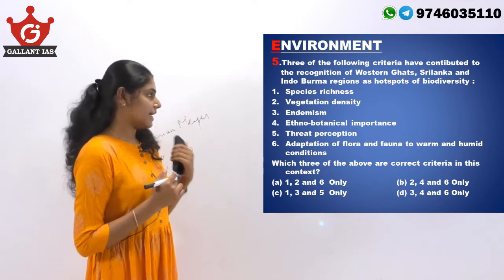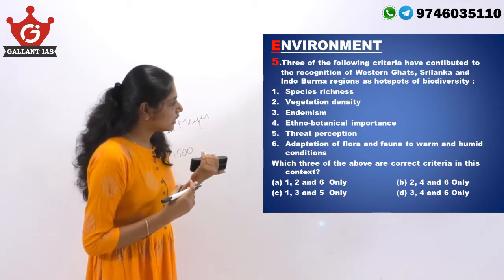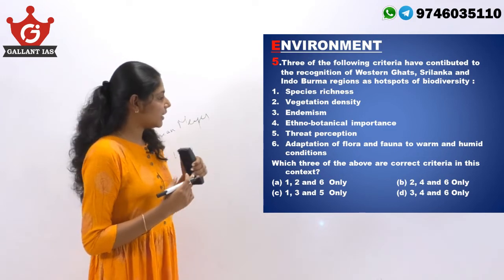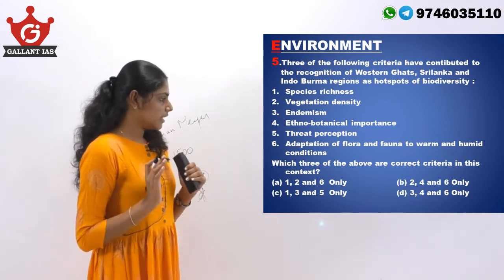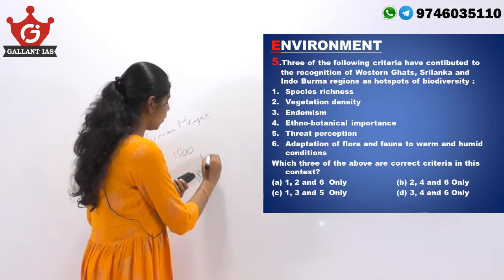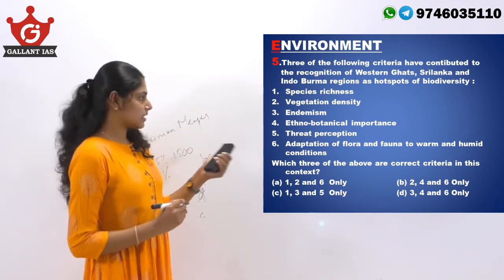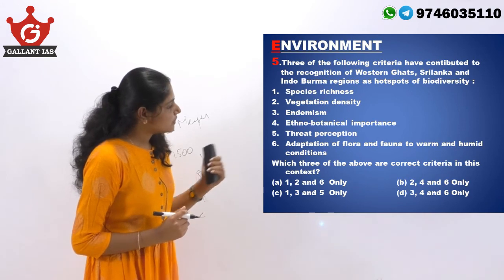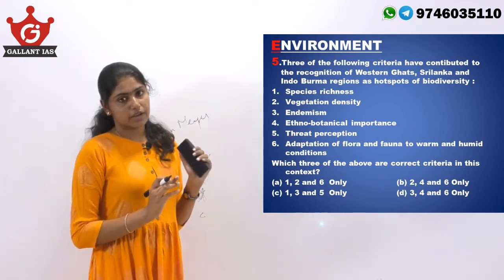Looking at the indicators: species richness — yes, that is there. Vegetation density — nothing about vegetation density is specified in the conditions, so you can eliminate options B and D. Since vegetation density is not a criterion, you can eliminate option A as well. The answer is option C, that is indicators 1, 3 and 5. Indicator 3 deals with endemism — yes, at least 1500 endemic plants should be there. Indicator 5 is threat perception — yes, that is also a criterion. These three indicators relate to biodiversity hotspots.